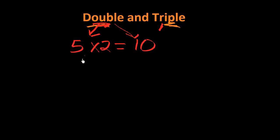If you triple, you multiply it times 3. So 5 times 3 equals 15. That's a triple. So a triple is 3, and a double is 2.